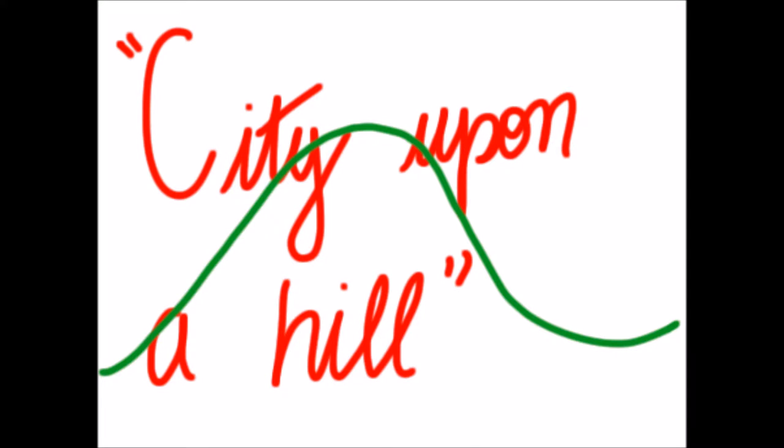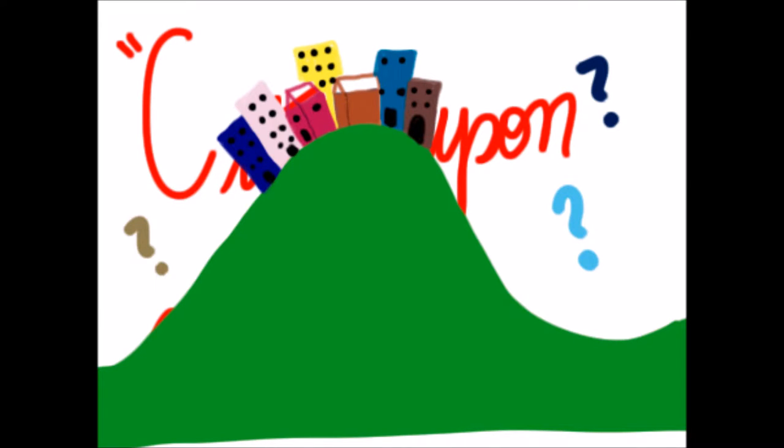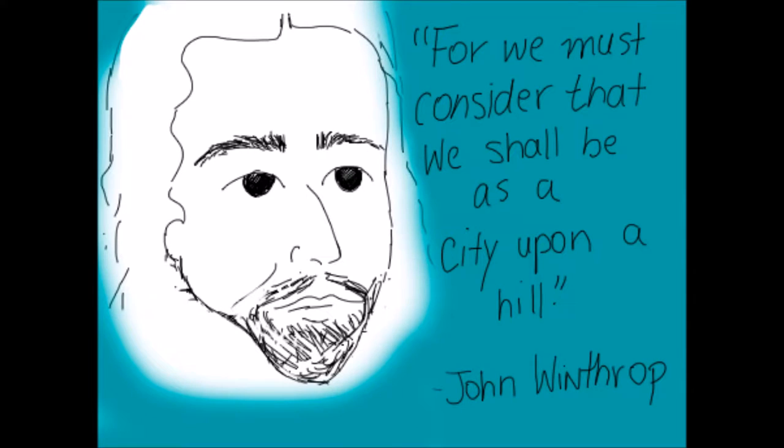To start with, what is the meaning of a city upon a hill? A city upon a hill is a term used by John Winthrop to describe a society which is a model of Christian charity.